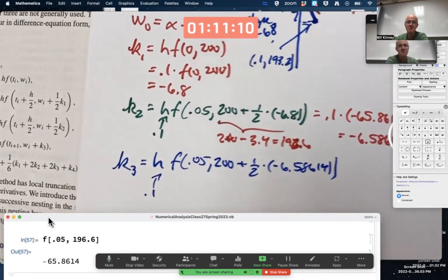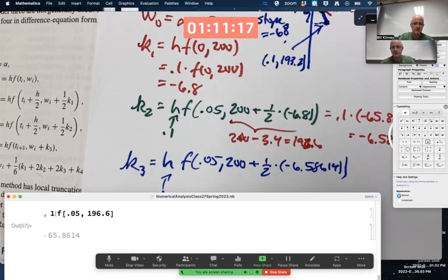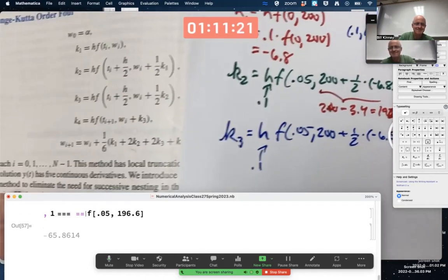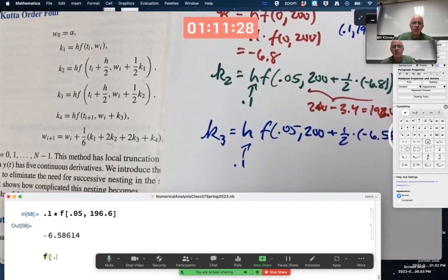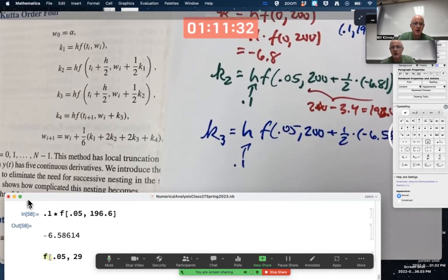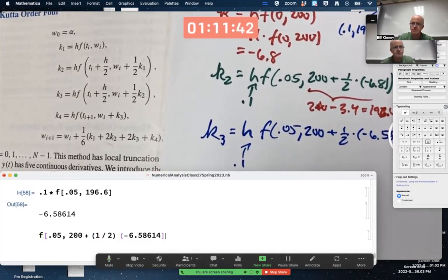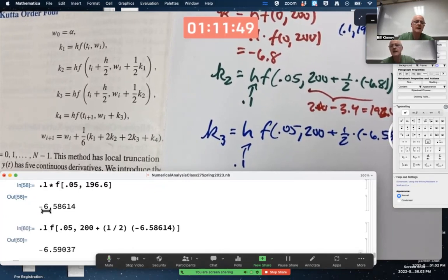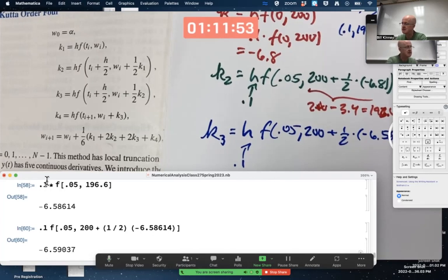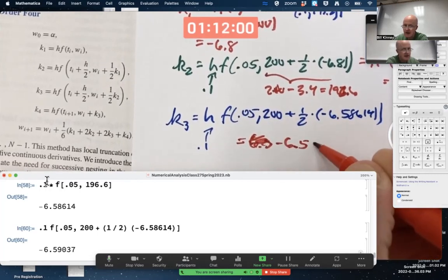You get another estimate for the change in Y. Once again, this is 0.1. So I'll do it this way in Mathematica. F of (0.05, 200 plus 1/2 times negative 6.58614). That's the slope we use, but then we multiply by 0.1 again. That's K3, negative 6.59037.